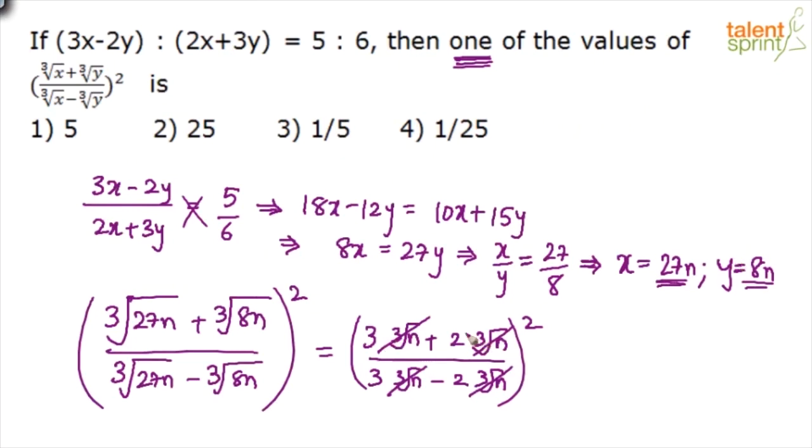So cube root of n gets cancelled. What are we left with? 3 plus 2 is 5, divided by 3 minus 2 is 1. 5 by 1 whole square gives 25 is your answer. 25, option 2, would be your answer.